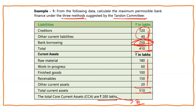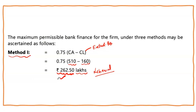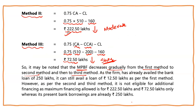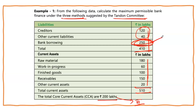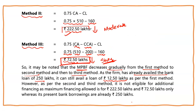The firm has already availed bank borrowings of 250 lakhs. Under Method 1, eligibility is 262.50, so the firm can still avail an additional 12.50 lakhs. However, under Method 2, the eligible bank finance is only 222.50 — meaning the firm has already borrowed in excess. Under Method 3, the eligible amount is even lower. So as per Method 2 and Method 3, they are not eligible for additional financing.